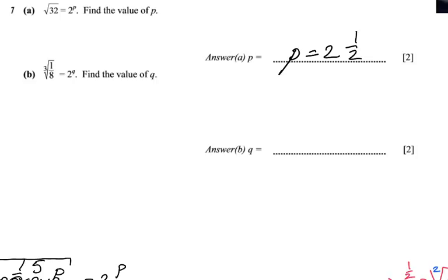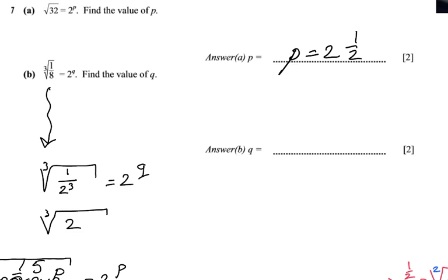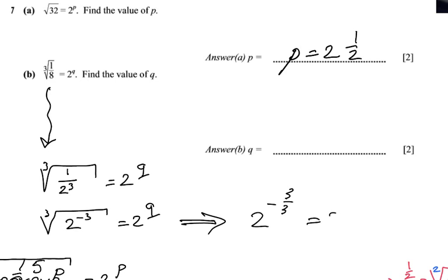There are two ways of doing this. First: the cube root of 1 over 8 — well, 1 over 8 is 1 over 2³, so that's the cube root of 2 to the power minus 3 equals 2 to the power q. Using a fractional index, this becomes 2 to the power minus 3 over 3, which equals 2 to the power q. So 2 to the power minus 1 equals 2 to the power q, meaning q equals minus 1.